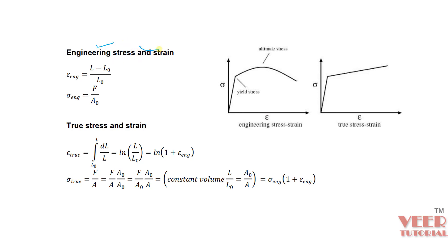Engineering stress does not consider the change in area of the specimen, while true stress also considers the change in area. Here, A-naught is the initial area and A is the final area. From this data we plot a curve between stress and strain. We are going to use true strain because it plots the actual values, and the software also considers the change in cross-section to give true stress and true strain.